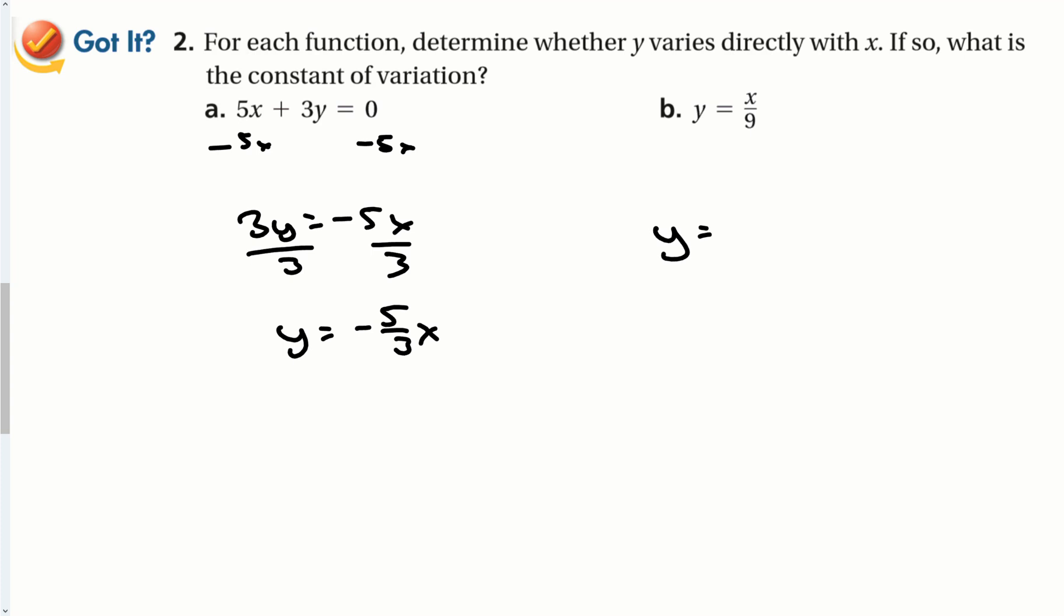Part B is already there. Division is the same thing as multiplying by a fraction. So I can split these into 1 over 9 times x. It's the same thing as x over 9. So this is already set up with direct variation. Here my constant of variation is negative 5 over 3. Here it is 1 over 9.